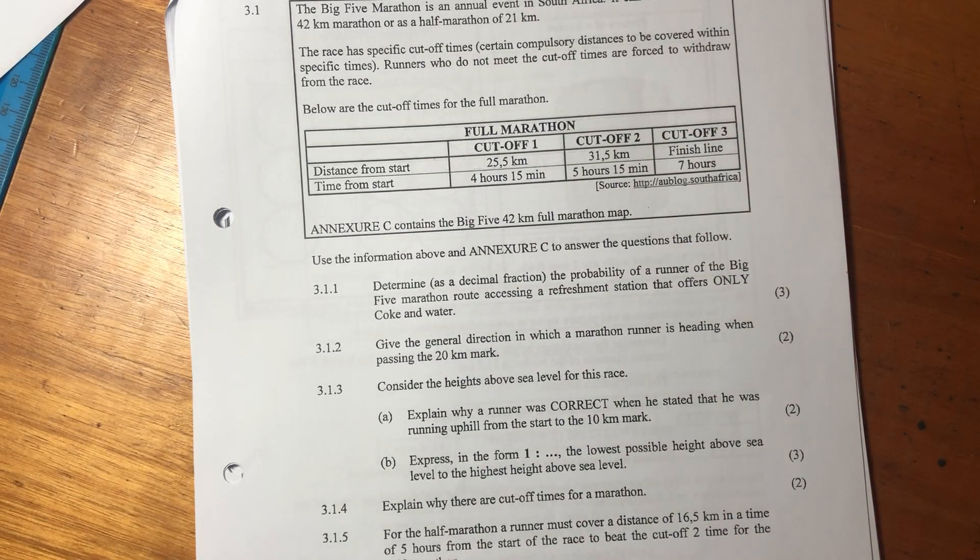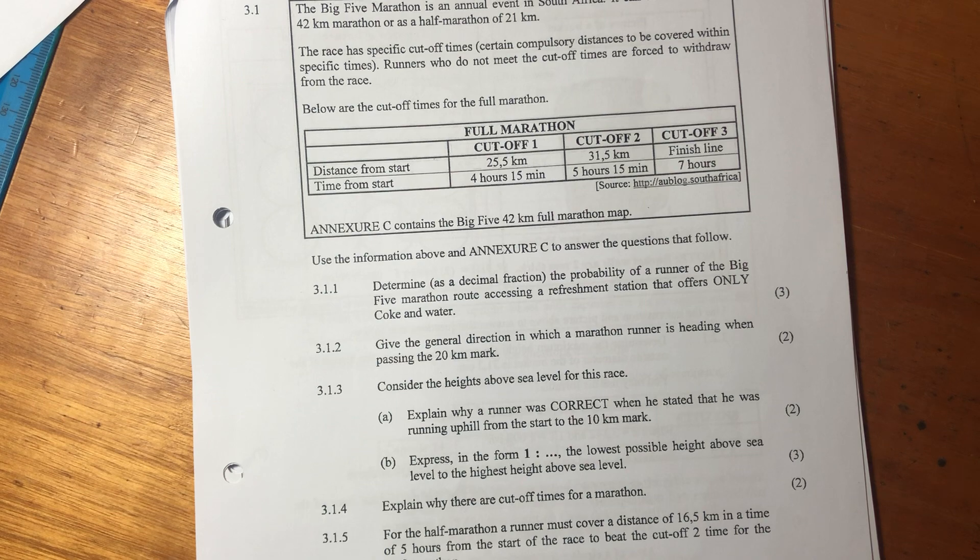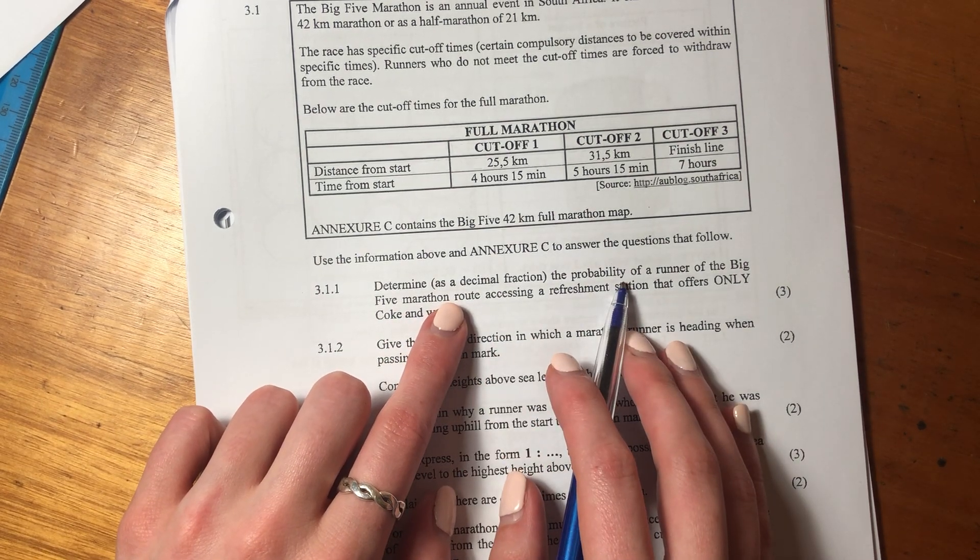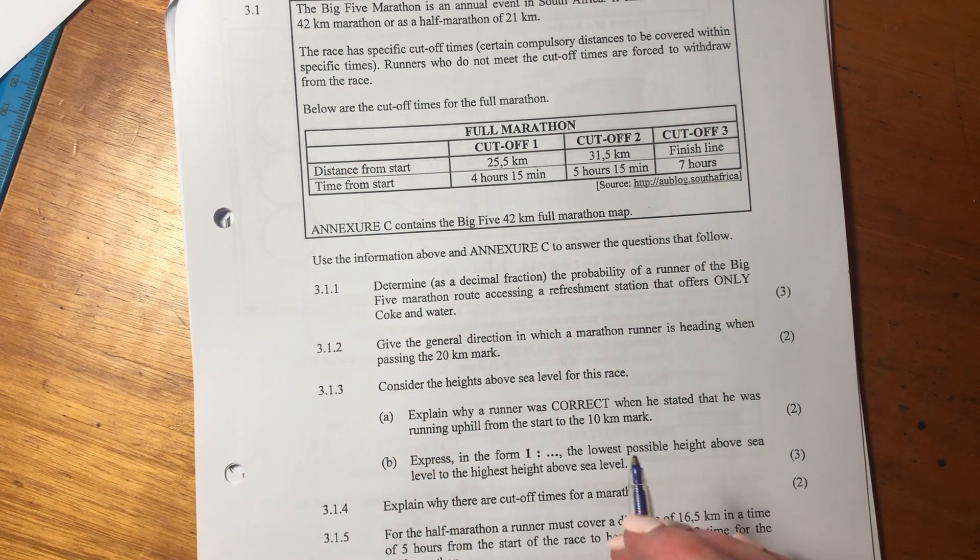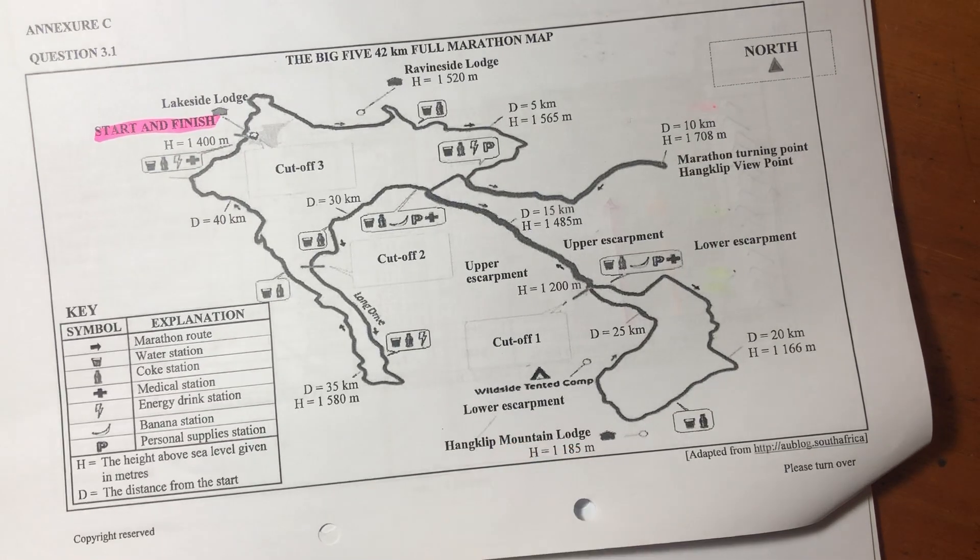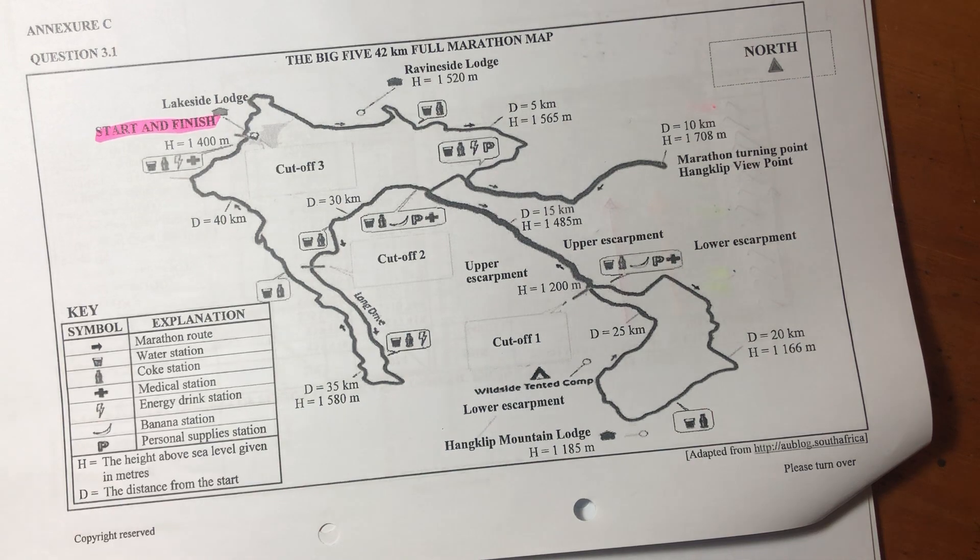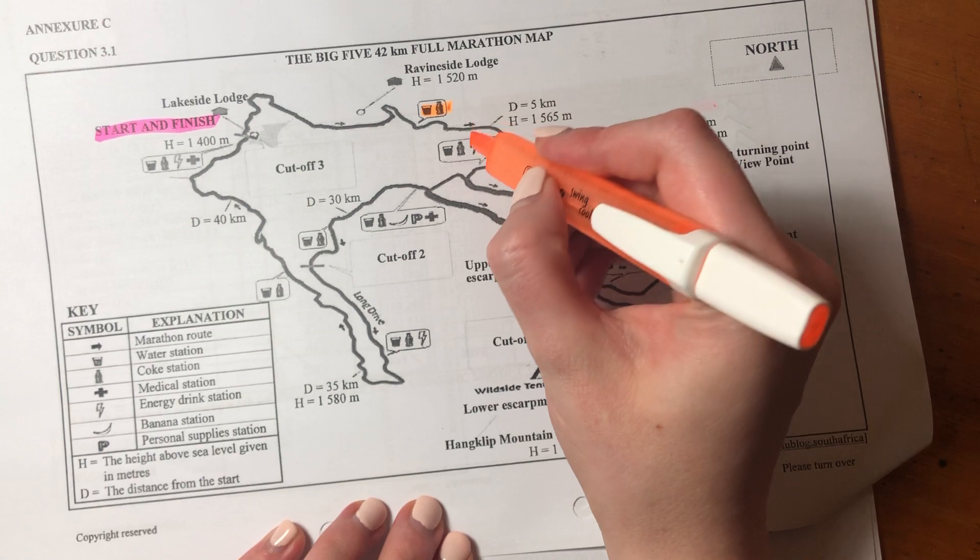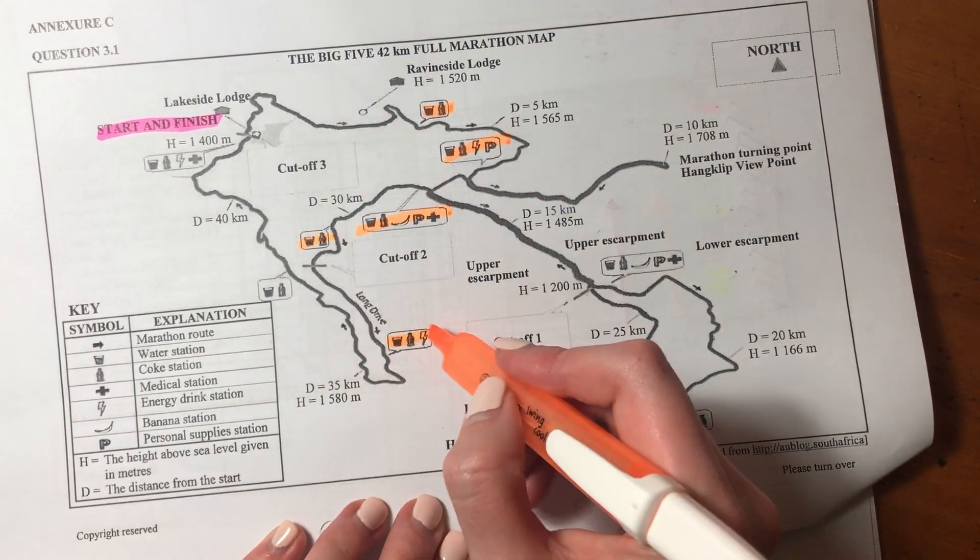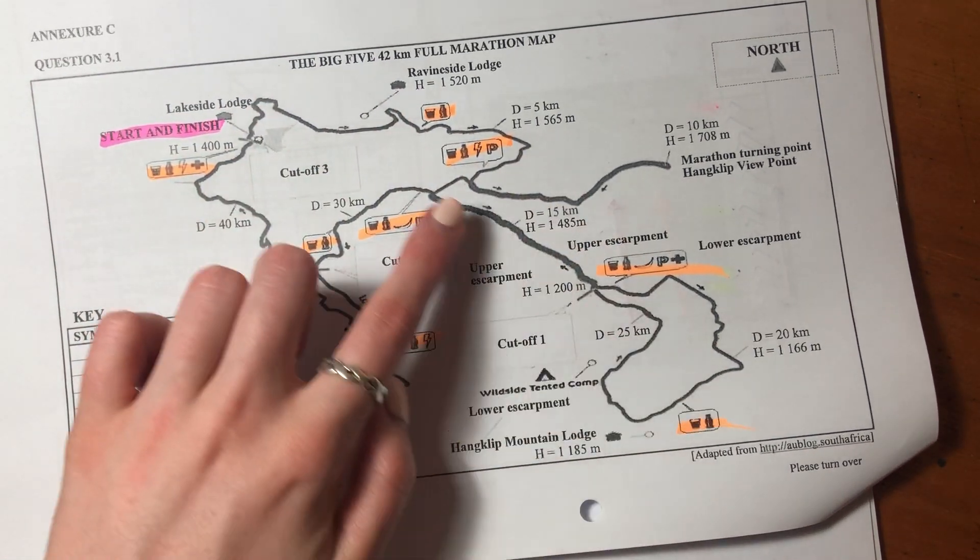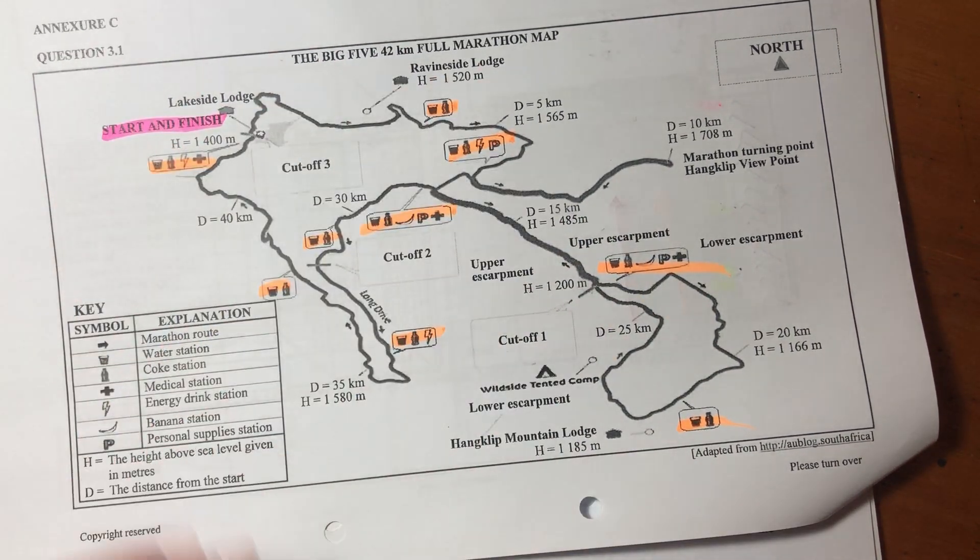So it says, determine as a decimal fraction—it's important, they're telling us what form they want the answer in—the probability of a runner of the Big Five Marathon, the route, accessing a refreshment station that offers only coke and water. So let's see what these refreshment stations offer. We can see that all these little guys are refreshment stations. So let's just highlight all of the refreshment stations. Let's see if we've got all of them: one, two, three, four, five, six, seven, eight, nine. Pretty much looks like all of them.